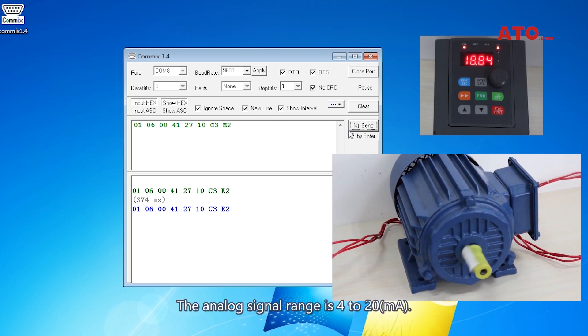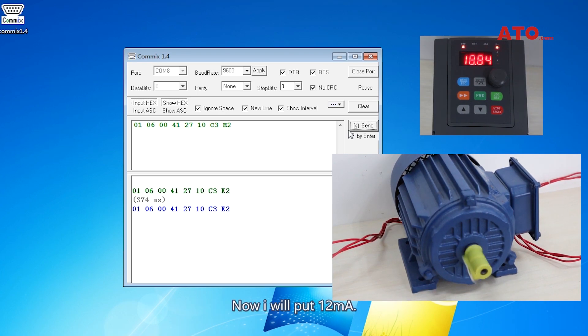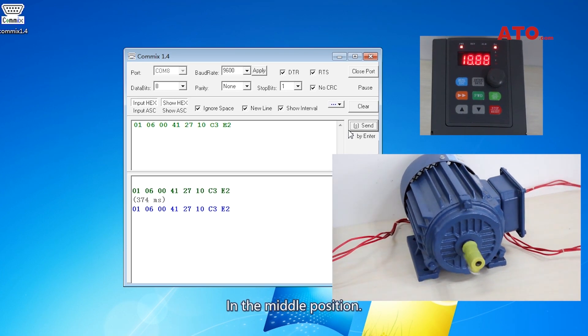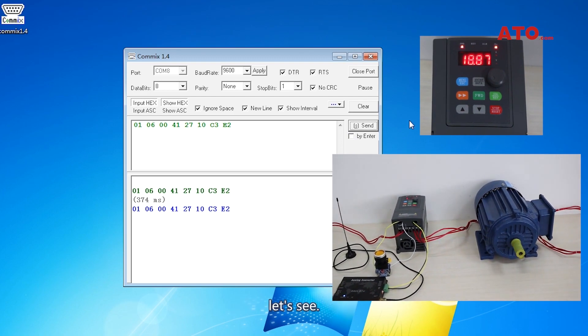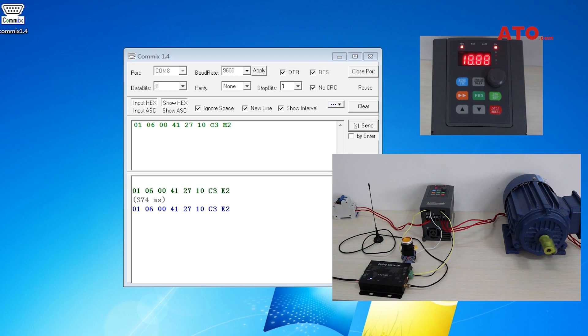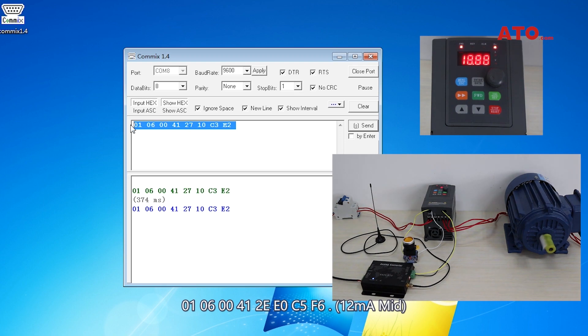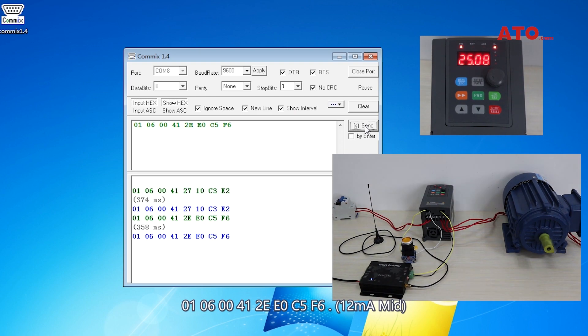The analog signal, the range is 4 to 20. Now I will put 12mA in the middle position. Let's see. The speed of motor is rising.